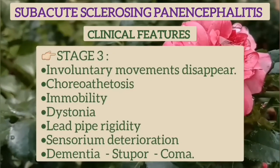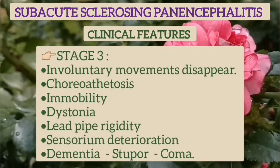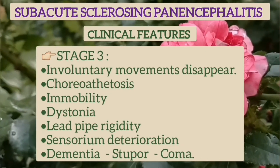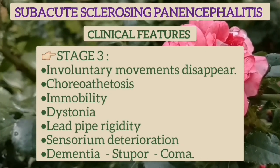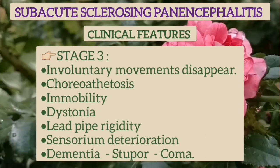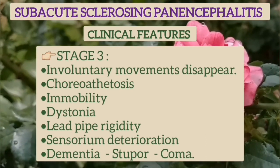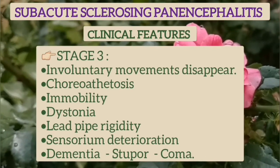In stage 3, the involuntary movements disappear and choreoathetosis, immobility, dystonia, or lead-pipe rigidity appear. The sensorium deteriorates and there is dementia, stupor, or coma.